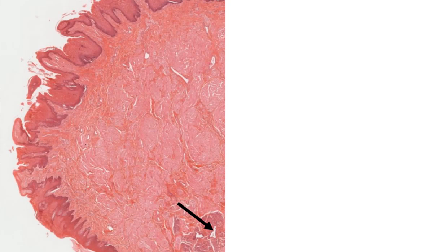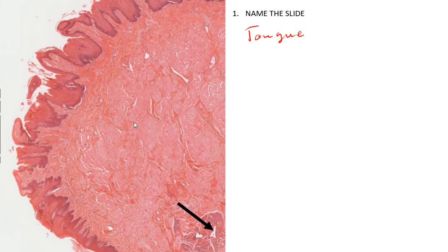The next slide: name the slide. This slide is just the tongue. When you look at the tongue you can see the epithelial tissue and also the muscles underlying this slide.